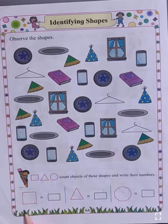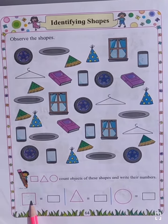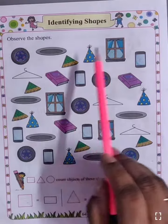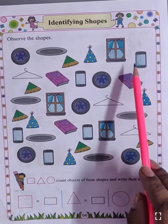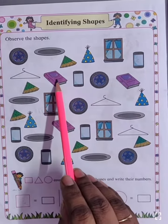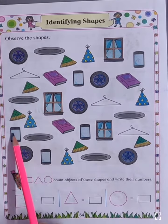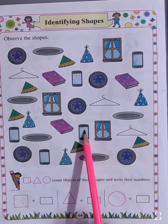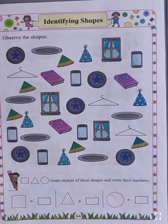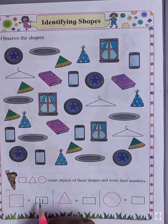First we will count the objects with the shape square, having four sides. 1, 2, 3, 4, 5, 6, 7, 8, 9, 10, 11. There are 11 objects. So write over here 11.